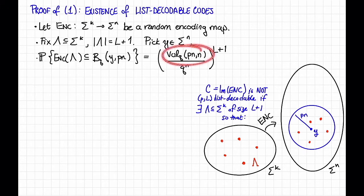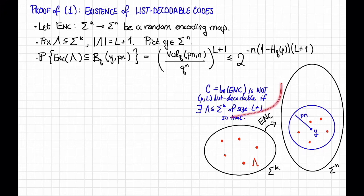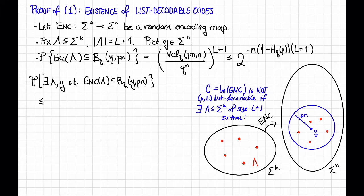We can use our approximation of the volume of Hamming balls to say that this is less than or equal to 2^(−n·(1 − H_q(p))) all to the power L+1. That's the probability that this bad event happens for a fixed lambda and a fixed y. Now we need to union bound over all such lambdas and all such y's. The probability that there exists such a lambda and y so that this bad event occurs is at most, by the union bound, q^k choose L+1 — the number of possible sets lambda — times q^n, the number of possible y's, times this probability.